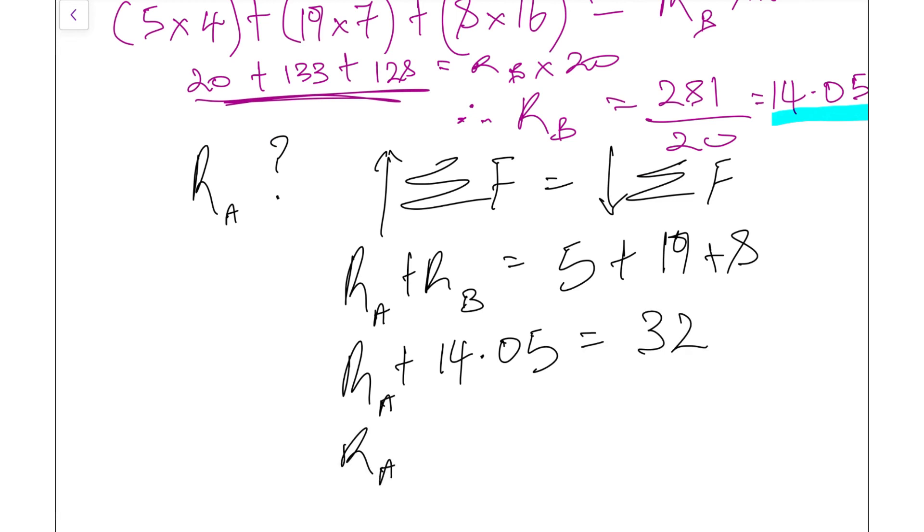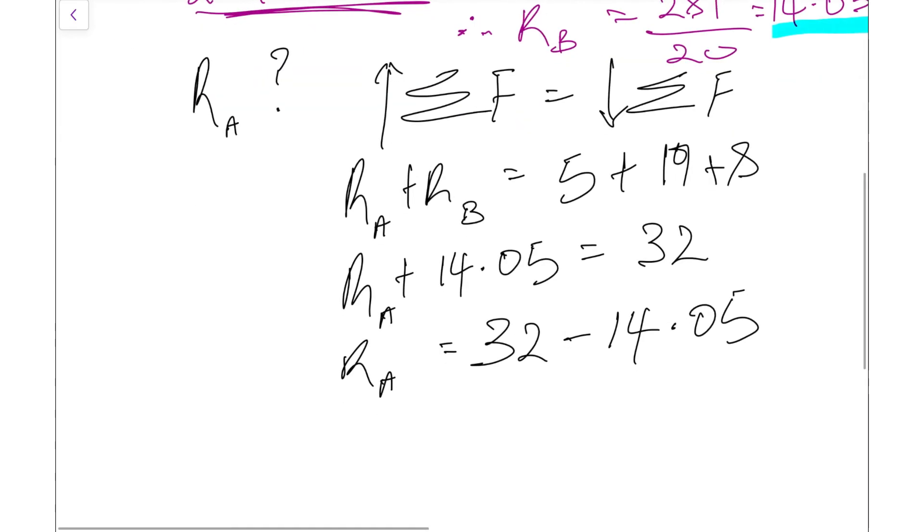So R_A is equal to 32 minus 14.05, and our final value for R_A is 17.95 kilonewtons. What that means is our system should be in equilibrium.